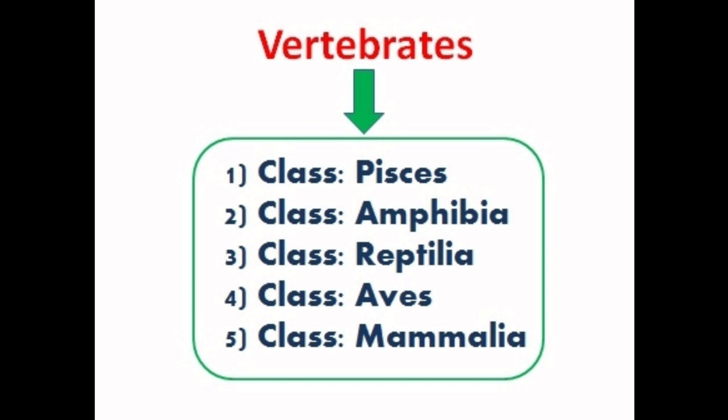Let's revise the five classes of vertebrates once again: Pisces, Amphibia, Reptilia, Aves, and Mammalia.